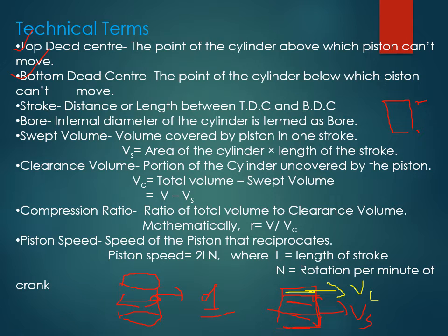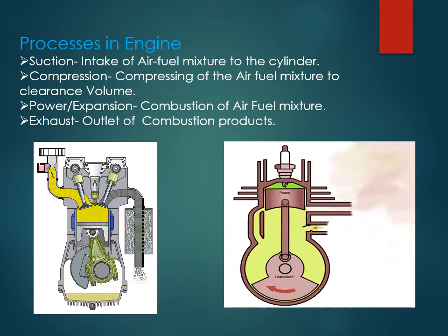If we look at the portion uncovered by the piston, that is the clearance volume Vc. Vc can be calculated by subtracting swept volume Vs from total volume V: Vc = V − Vs. The compression ratio is total volume divided by clearance volume. Piston speed is the average speed of the reciprocating piston, calculated by 2LN, where L is the length of the stroke and N is the speed in rpm — giving speed in meters per minute — or rps for meters per second.